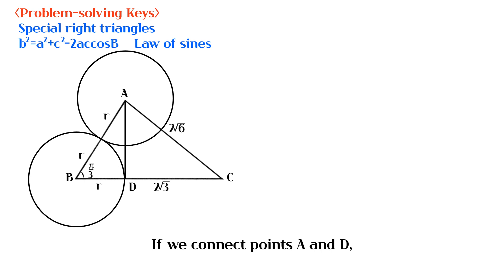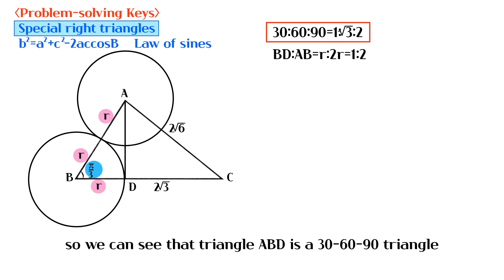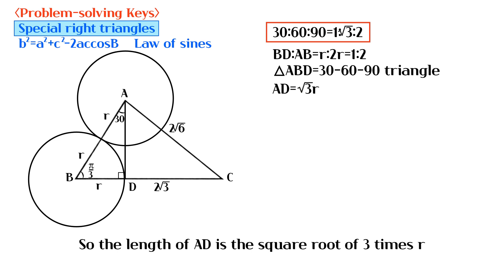If we connect points A and D, the ratio of the two sides of triangle ABD is 1 to 2, and its included angle is 60 degrees. So we can see that triangle ABD is a 30-60-90 triangle. So the length of AD is √3 times r.